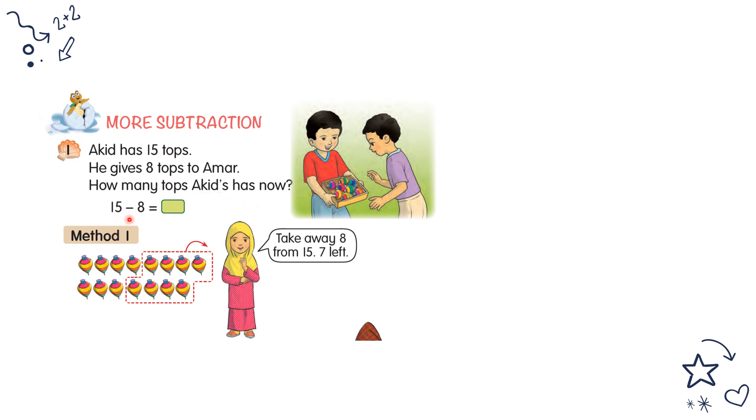This means 15 minus 8 equals how much. First method, you can use this: you draw 15 and you draw 15 total. Then take away 8, minus 8, you take away 8.